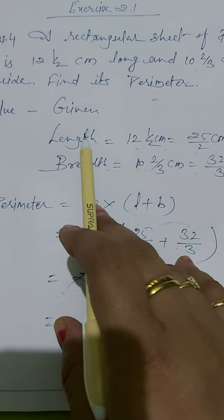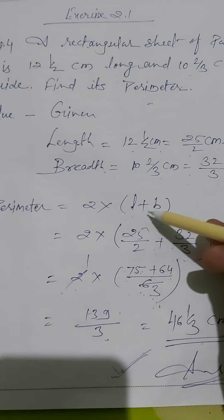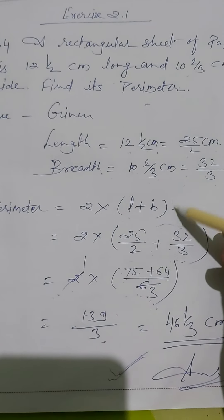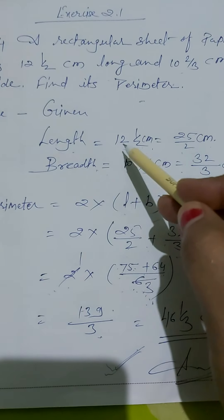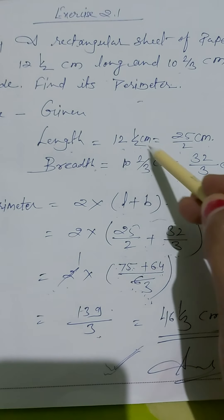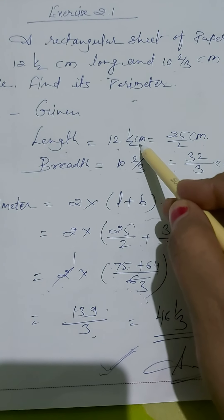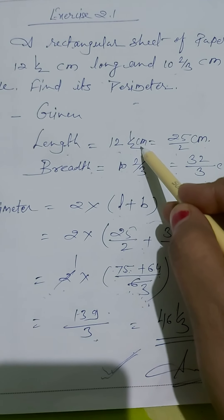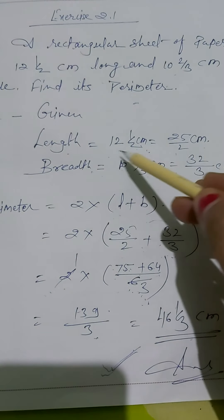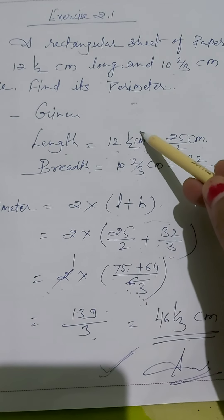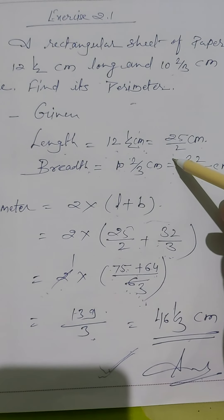The formula for the perimeter of a rectangle is 2 into (length + breadth). According to the question, the length is 12 and 1/2 centimeters, given as a mixed fraction. We convert it to a simple fraction: 12×2 = 24, plus 1 = 25, so length = 25/2 centimeters.